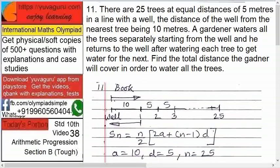Understand the problem first. Here, this is the well. Then these are 25 trees. He goes from well to the first tree, waters it, comes back. Then again goes to the second tree, waters it, comes back. Third tree and so on, up to 25. Now what do you have to find? The total distance traveled by him while watering these plants.